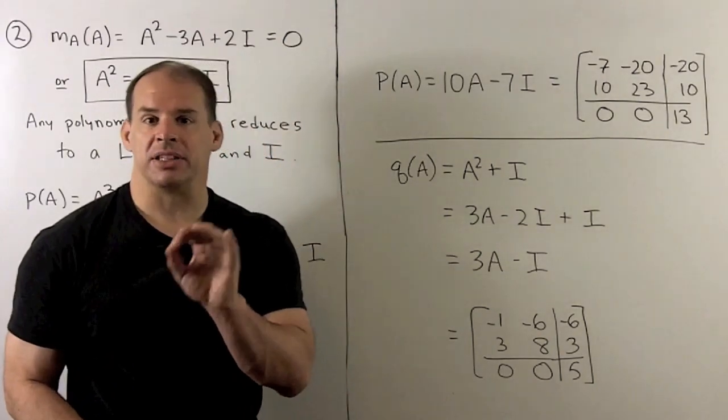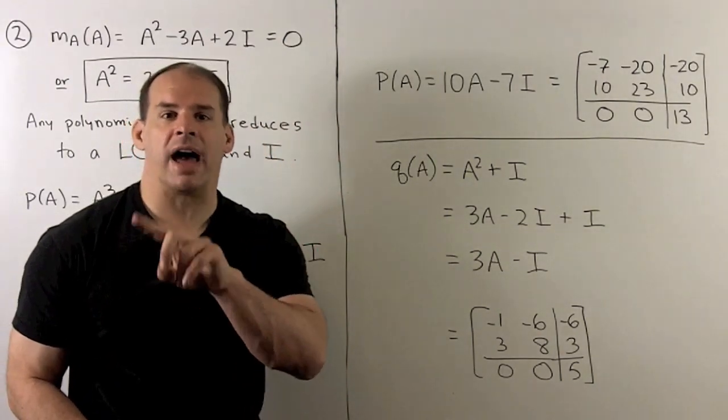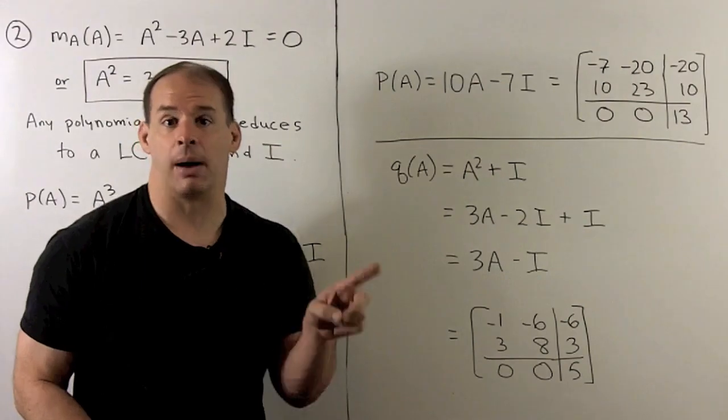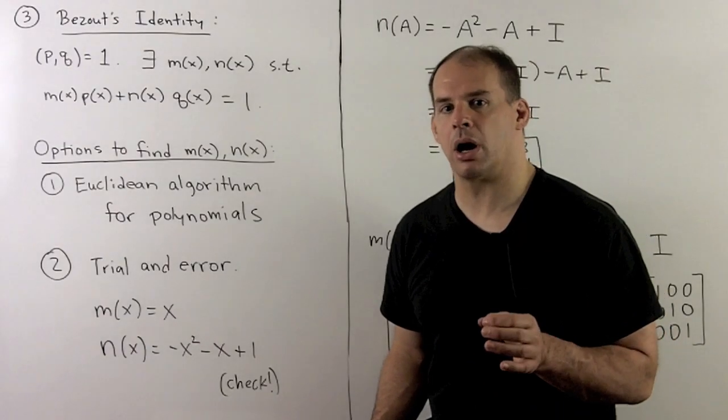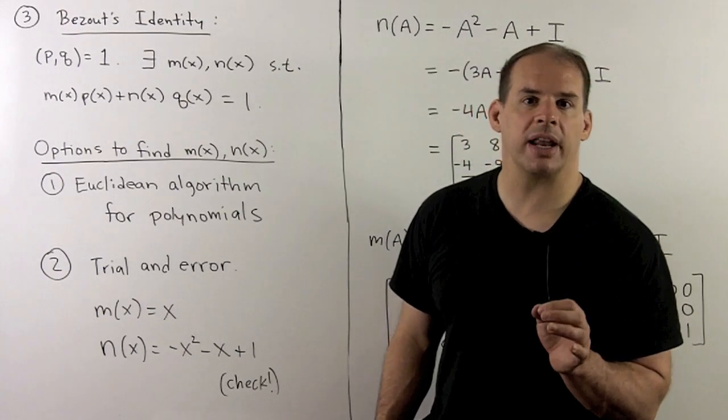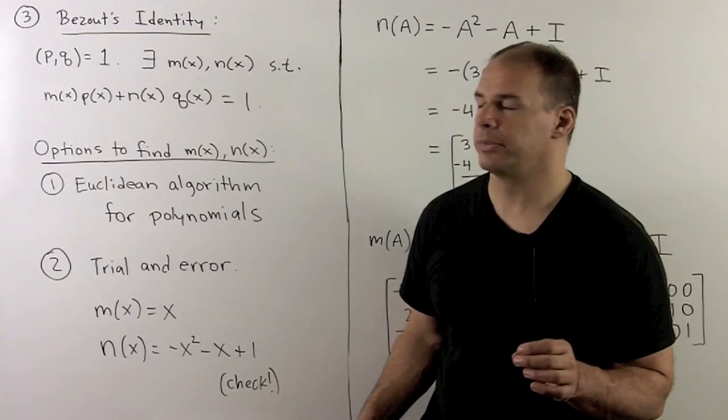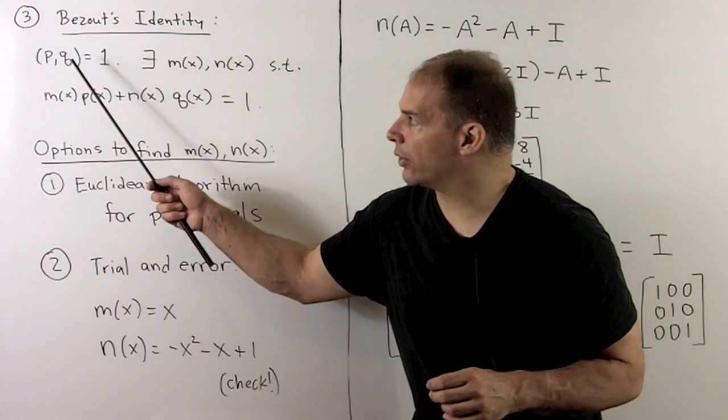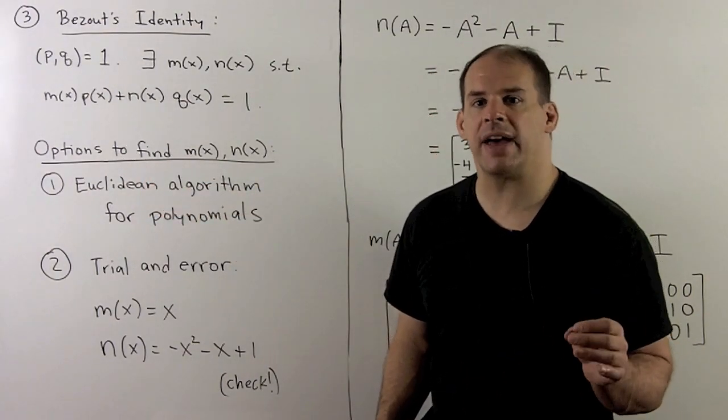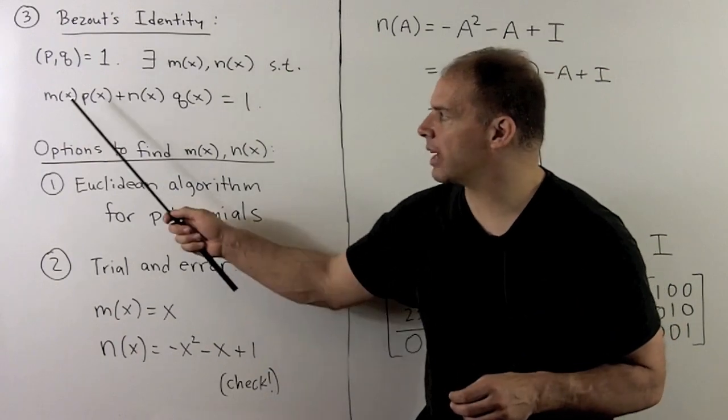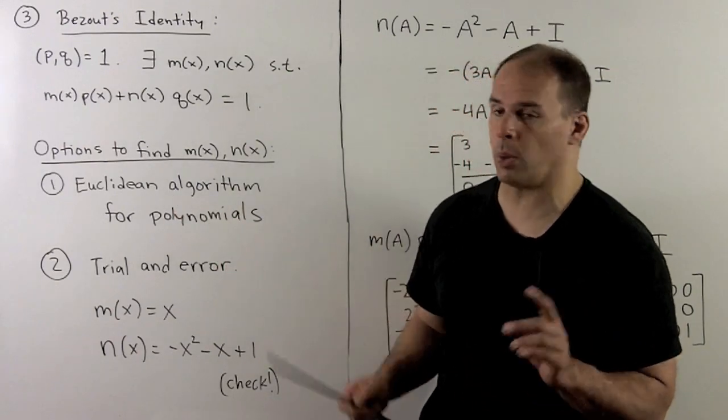You should check that you get the same answer if you just evaluate by taking powers and then sum. For the final part, first note Bezout's identity for polynomials. Here, we're in the special case where the greatest common divisor of P and Q is equal to 1. So there exist polynomials M of X and N of X such that M times P plus N times Q equals 1.